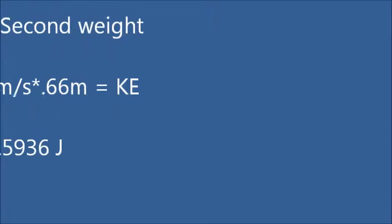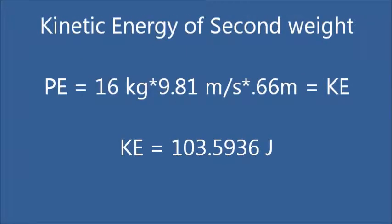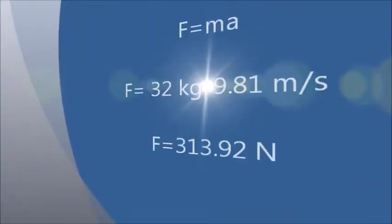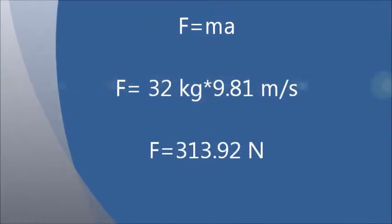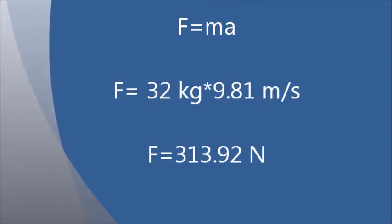For our second experiment, the weight is reduced to 16 kilograms and our calculations would be the same, resulting in 103.5936 joules of kinetic energy. To calculate the force of the throw itself, we know that force equals mass times acceleration, therefore force equals 32 kilograms times 9.81 meters per second, which gives us a force of 313.92 newtons.